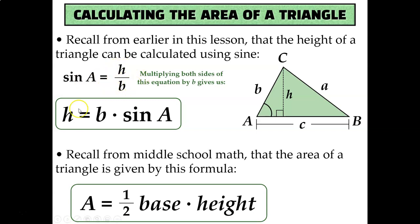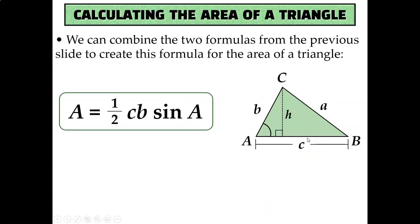Solving for h yields this formula: height equals b times sine of A. Now recall from middle school, or maybe even elementary school math, that the area of a triangle is equal to one-half times the base of the triangle times the height of the triangle. Well, we just found an alternative way to express the height. The height is equal to b times sine of A, and the base is the length of little c. So we could say that the area of a triangle is equal to one-half times the base, which is little c, times the height, which is b times the sine of A.